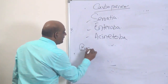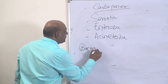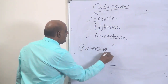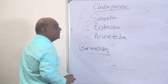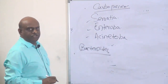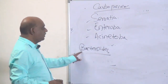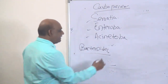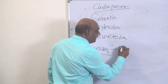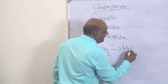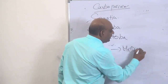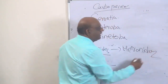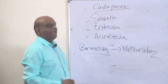For Bacteroides infection — very common in soft tissue infections — what do you use? Metronidazole is the drug of choice. Please don't forget in tomorrow's exam.